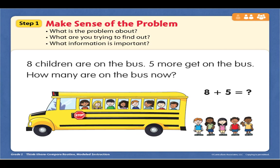All right, Sophia is leaving us now. So let me read this to you again. Eight children are on the bus. Five more get on the bus. How many are on the bus now? The problem is about children on the bus. We are trying to find out how many children are on the bus in all. And the important information is our numbers — eight and five.